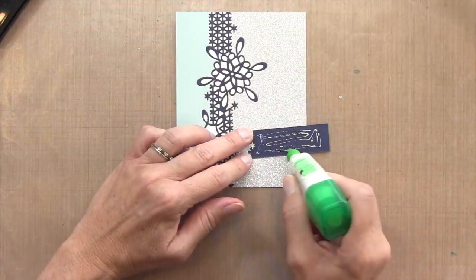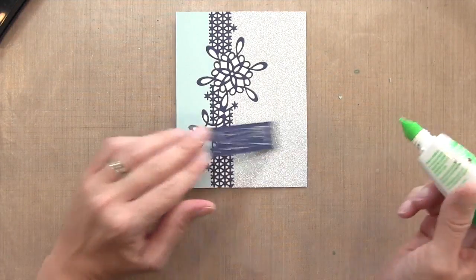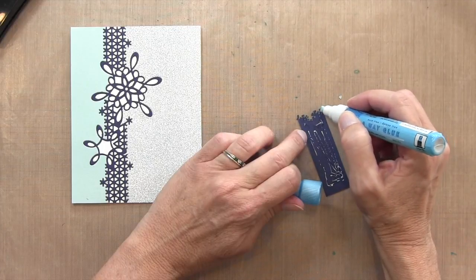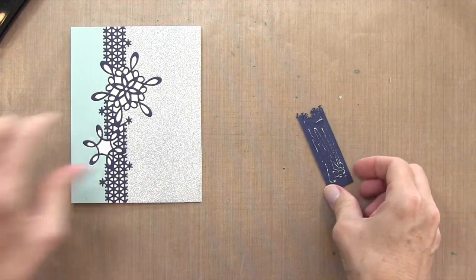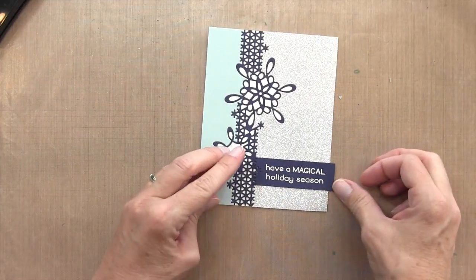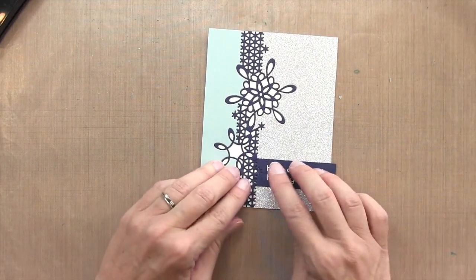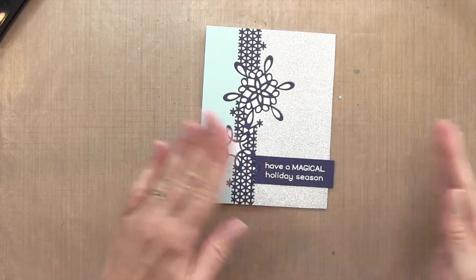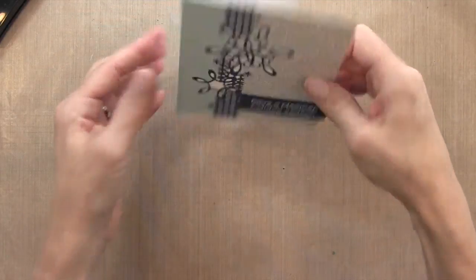I put some Tombow glue on it, then used my Zig two-way glue pen to really get into those little pieces. I'm positioning this right against those same die-cut lines of the Night of Navy piece so it looks like it's coming out of there. I went a little over the edge, so I'll take my scissor and trim that excess off.